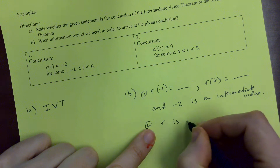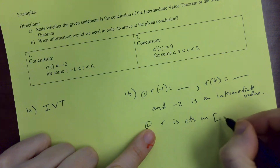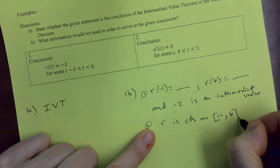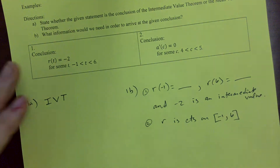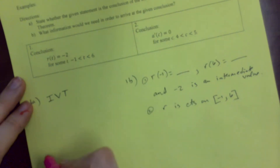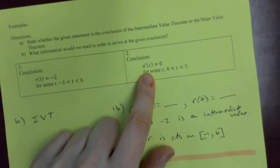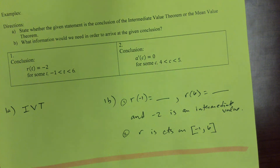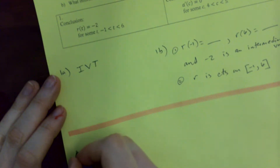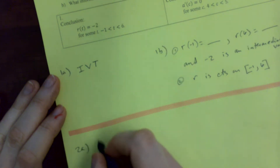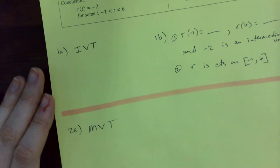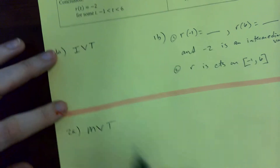We need to say that R is continuous on the closed interval from negative one to six. That completes the explanation for number one. For number two, the conclusion is that A prime of C equals zero for some C between four and five. This time it's the mean value theorem, because it involves a derivative. If it says the derivative equals some number, that's MVT; if it says the original function equals some number, that's IVT.